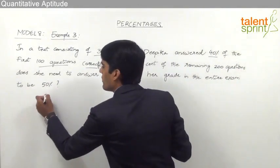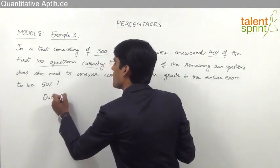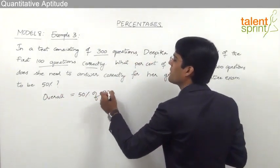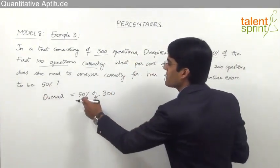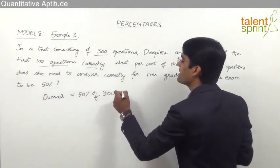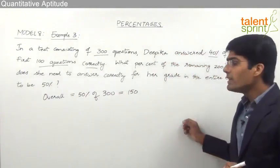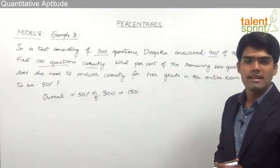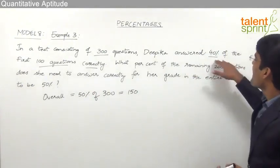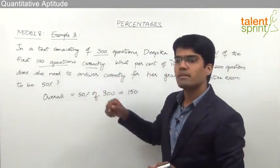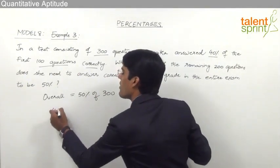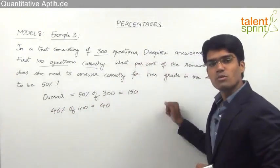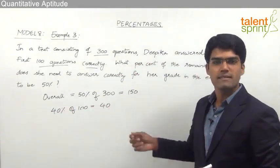Let us first understand her required overall performance. It should be 50% of the total 300 questions, which equals 150. So Deepika must answer 150 questions correctly to get 50% overall. We know she answered 40% of the first 100 questions correctly — 40% of 100 is 40, so 40 questions from the first 100 are correct.